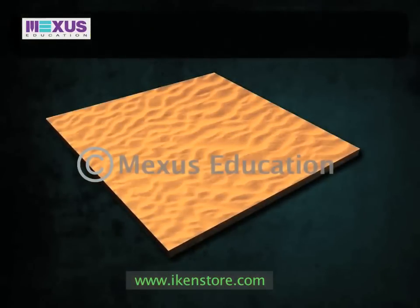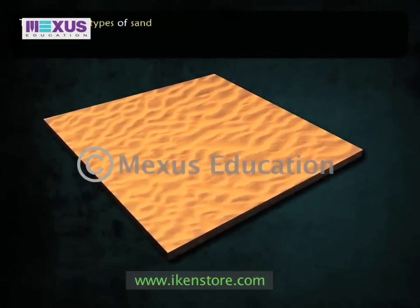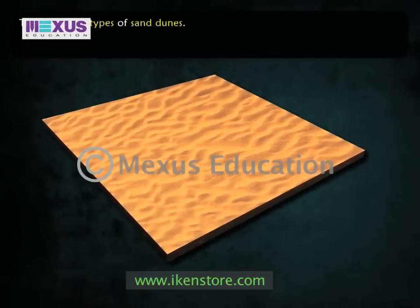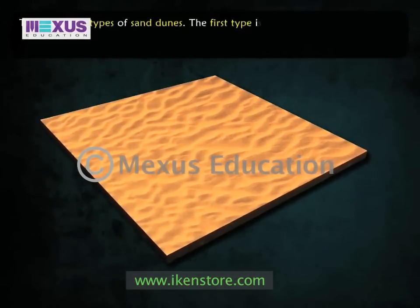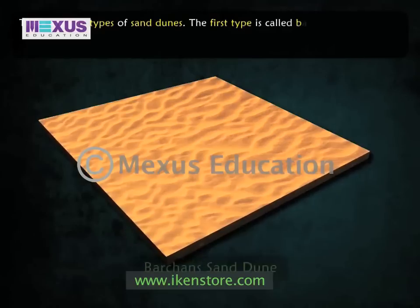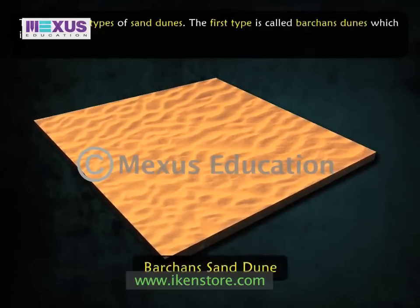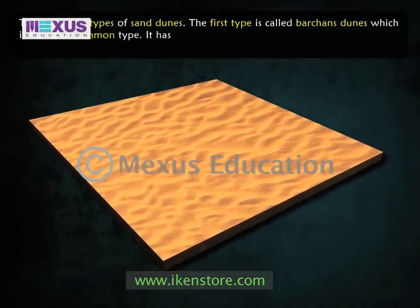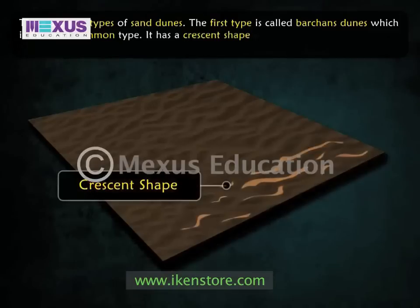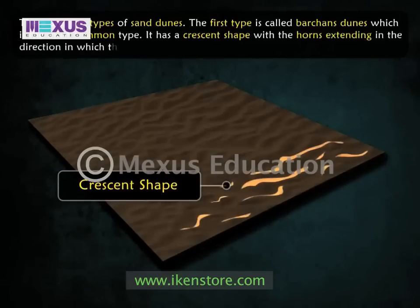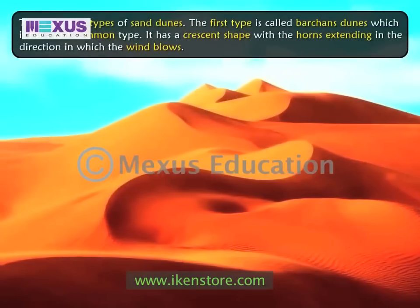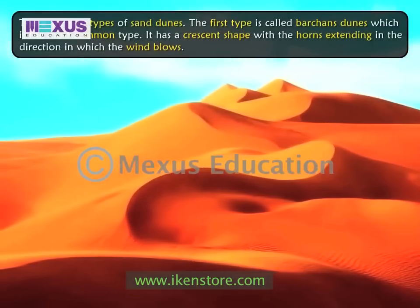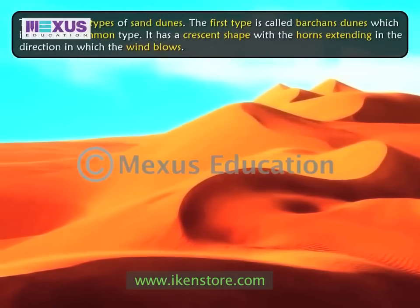There are two types of sand dunes. The first type is called Barkhan dunes, which is the most common type. It has a crescent shape with horns extended in the direction in which the wind blows. It is mostly found in the deserts of Rajasthan.